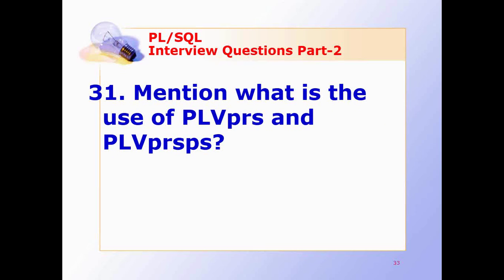What is the use of PLV_PRS and PLV_PRS_PS? PLV_PRS is an extension for string parsing in PL/SQL and is the lowest level of string parsing functionality. PLV_PRS_PS is the highest-level package to parse PL/SQL source code into separate atomics, and it relies on other parsing packages to get work done.